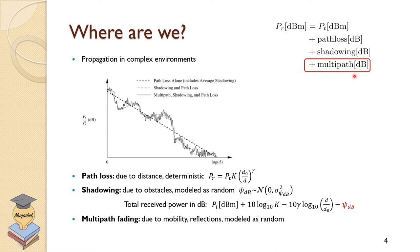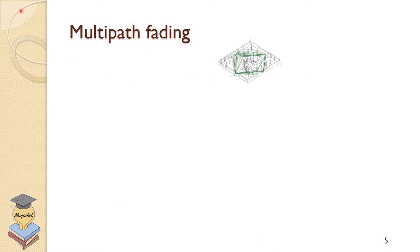We'd like to model the multipath fading due to mobility, reflections, and mobility and reflection together — modeling that as a random process. We'd like to add an additional loss into the link budget equation for multipath fading.